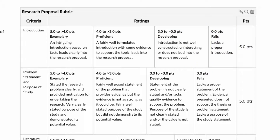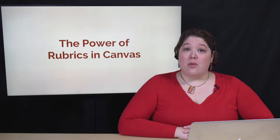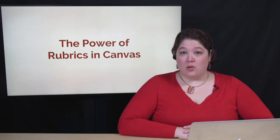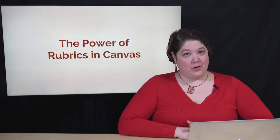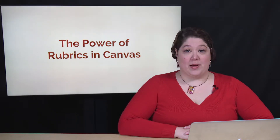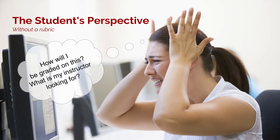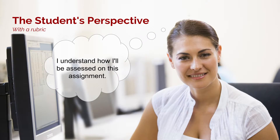You can find examples of rubrics for many different types of assignments and subject areas online. If you're not already using rubrics with your assignments, you'll want to consider them. Here are a few reasons why. First, let's think about the student's perspective. An easy way to frustrate students is to send them off with an assignment unclear on how they will be assessed on it. A rubric attached to the assignment gives them the grading criteria ahead of time and helps them see the goals of the assignment.